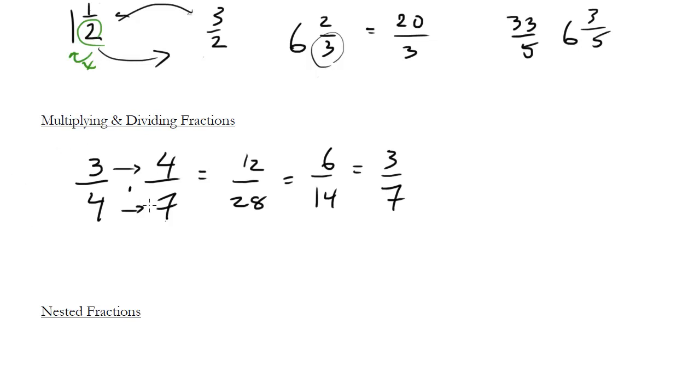Notice when you multiply two fractions, the answer you get is smaller than the original numbers or at least one of the original numbers. So it's going to be smaller than 3 fourths and actually smaller than 4 sevenths, it's smaller than both of them. So that's just one little note.